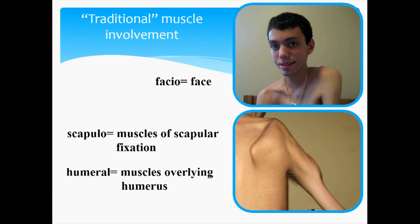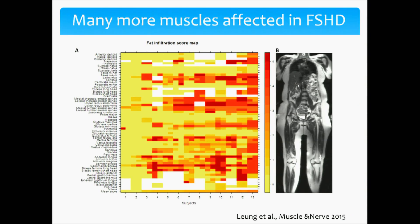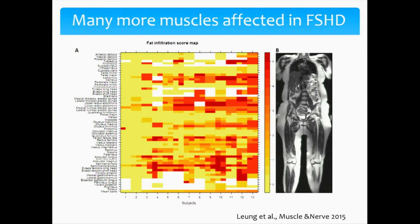Not many people in this room don't know that the traditional muscles involved in FSHD, for what it gets its name: the face, the muscles of scapular fixation, and the muscles overlying the humerus bone. What you may not be aware of are the other muscles that are profoundly affected in FSHD, and are probably affected more early than the face, scapular, and humeral muscles. What you're looking at here is a whole-body MRI.